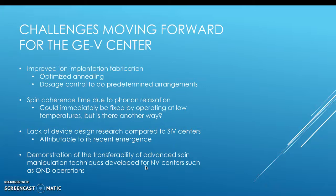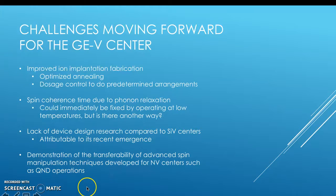The challenges moving forward for GeV centers include fabrication challenges in ion implantation, where we need to improve optimization times for annealing and improve control over dosage to achieve predetermined arrangements as seen in silicon vacancies. Spin coherence times overall need to be increased, which can be done immediately by lowering temperatures, but other solutions would be preferable. There is also a lack of device design compared to SiV and NV centers, attributable to this field's recent emergence. Demonstrations of advanced spin techniques such as advanced ESR and QND operations from NV centers into GeV centers are also needed.